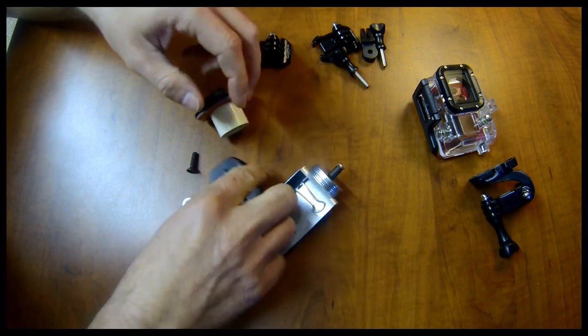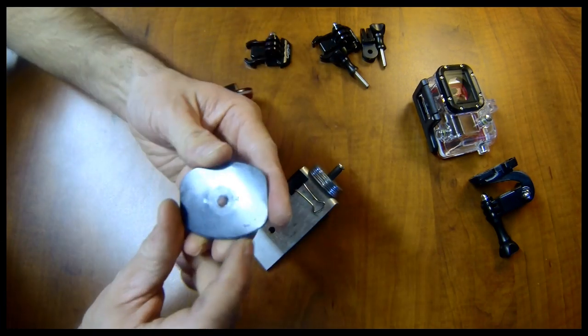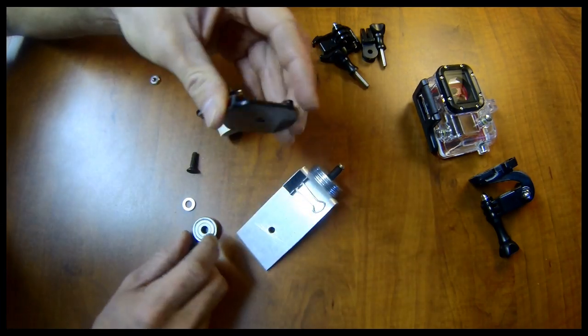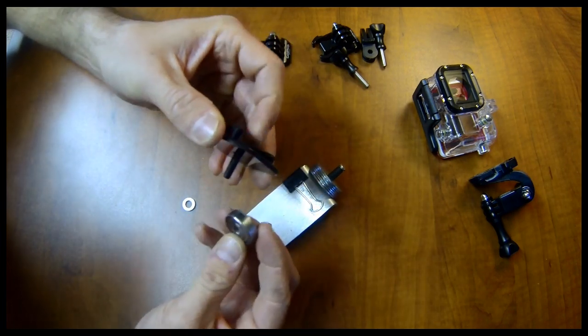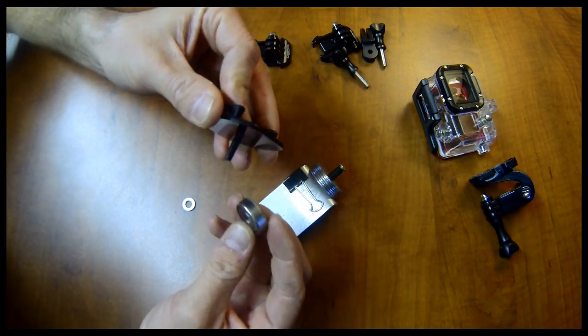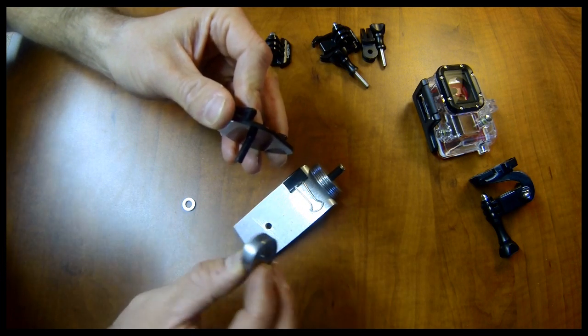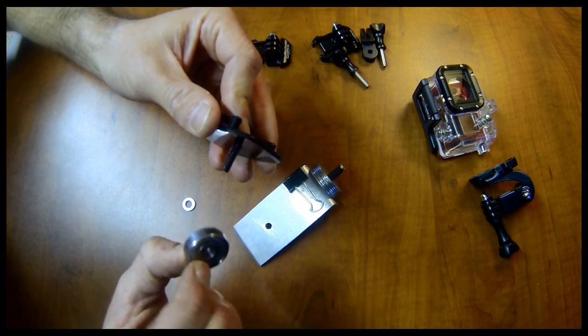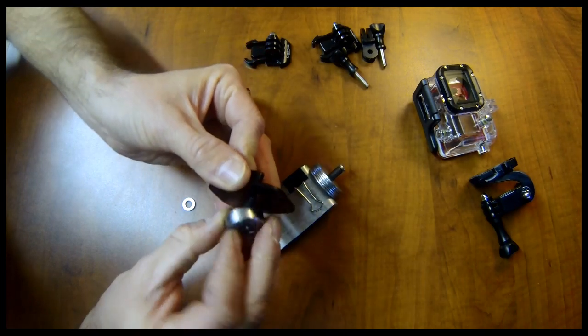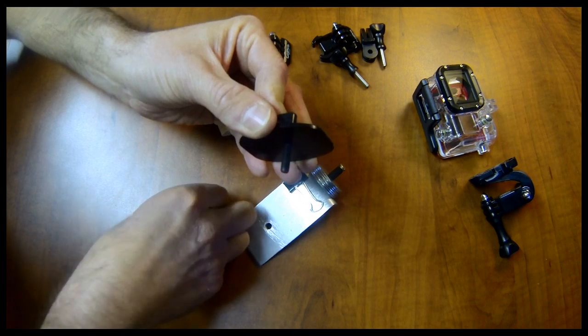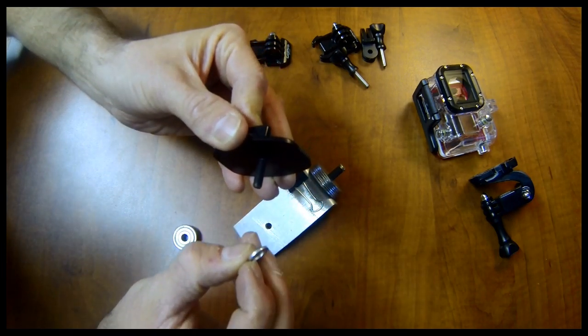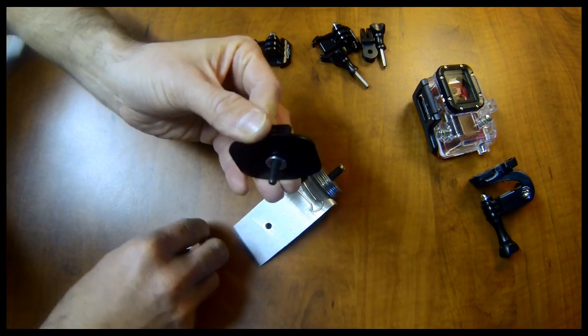The other side you take another flat mount. This one I have the adhesive removed. Put your screw through and take your bearing which is a 6x22x7 bearing. You probably have to order these. Slide it on the screw.